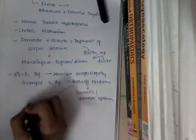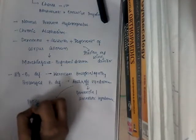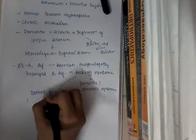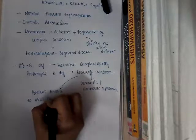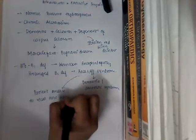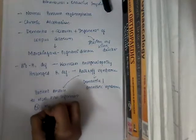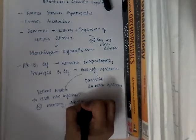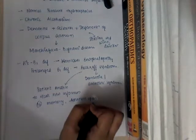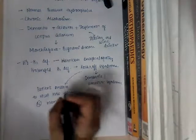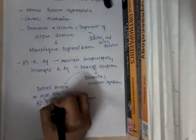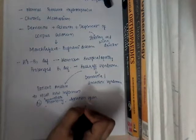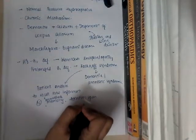In Korsakoff syndrome, the patient is unable to recall new information, but old memory is normal. Immediate memory and attention span are normal, but the patient cannot store new information for more than a few minutes — that is the major difficulty.